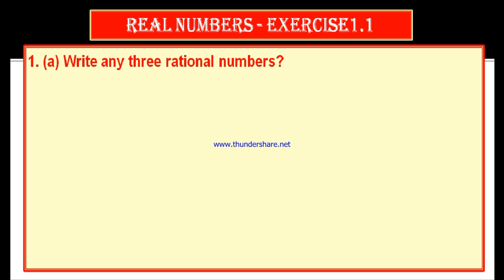A rational number is a number in the form of p by q, where q is not equal to zero and p, q are integers. Now we have to give three examples. Therefore, we may give 0, 1, 2 — all these are rational numbers. Every natural number, every integer, every whole number is a rational number. You can also give fractions like 1 by 2, 2 by 3.